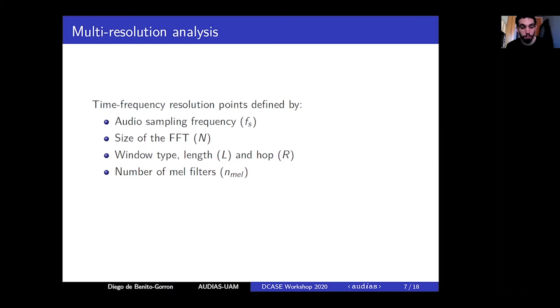Each time frequency resolution point for MEL spectrogram features is defined by a set of parameters which are the audio sampling frequency, the size of the fast Fourier transform, the window type, length and hop, and the number of MEL filters employed. It's important to note that there is a compromise between time and frequency resolutions, as increasing one of them implies decreasing the other one.